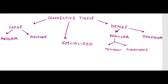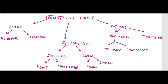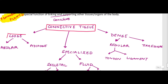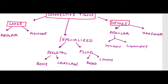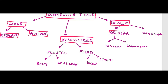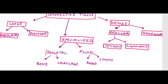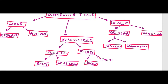This flow chart is extremely important and will make your learning process easier — everything is in a nutshell so it's easy to revise. Loose can be classified into areolar and adipose; dense into regular and irregular, with regular further classified into tendons and ligaments. Specialized connective tissue includes skeletal — bones and cartilages — and fluid, which includes blood and lymph.